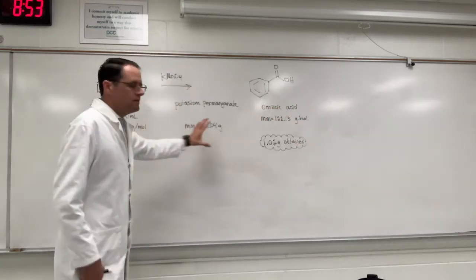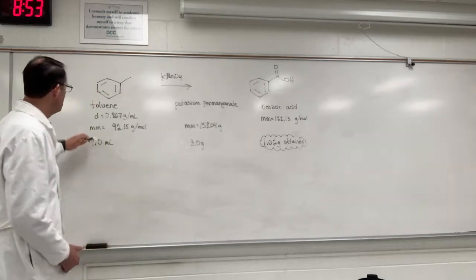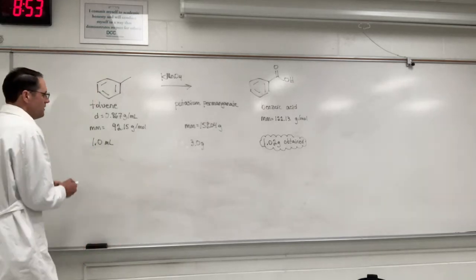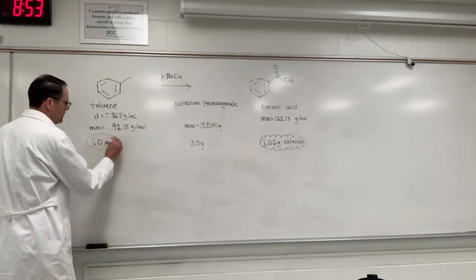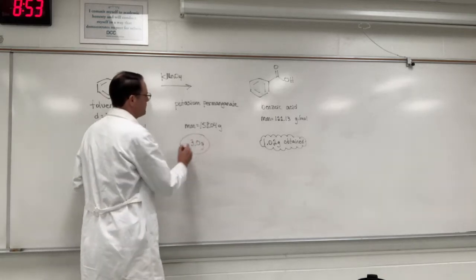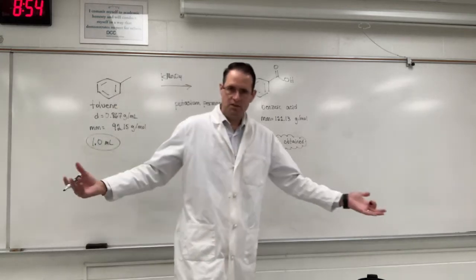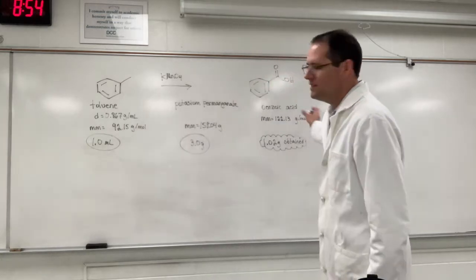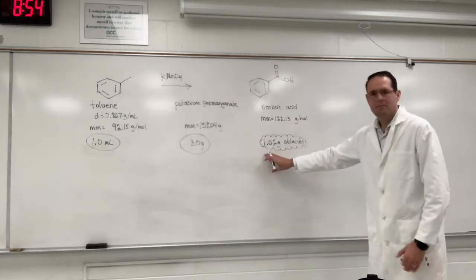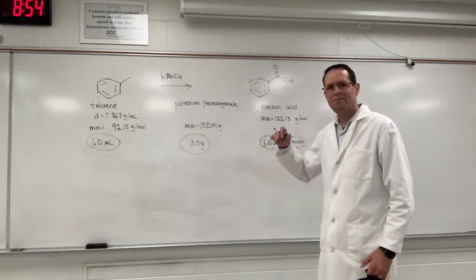All the information we need here is on the board. So this is what we're starting with. We mix 1 milliliter of toluene, 3 grams of potassium permanganate, and a whole bunch of other stuff and do a whole bunch of procedures to get the product at the end. This is the amount we obtained from an actual experiment.